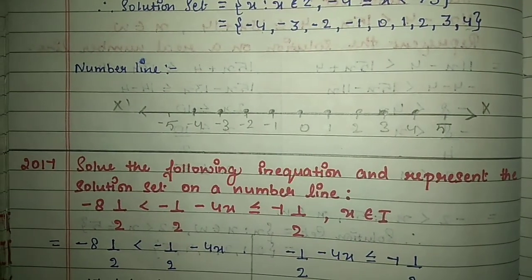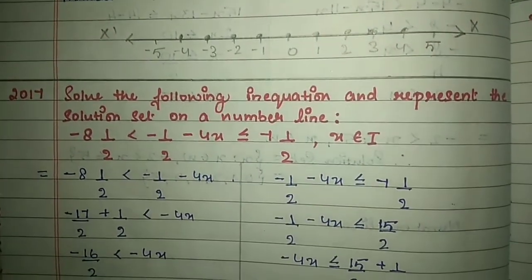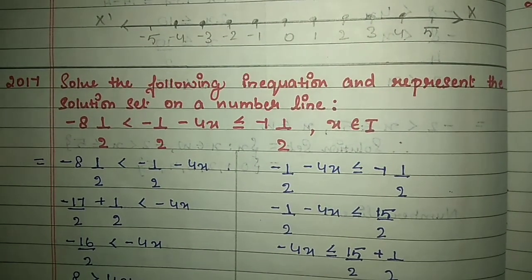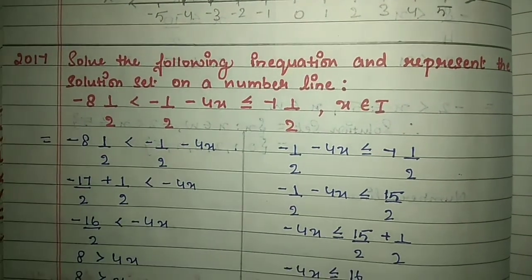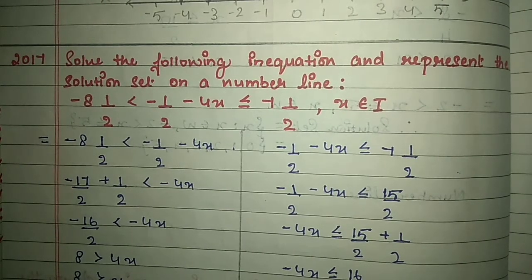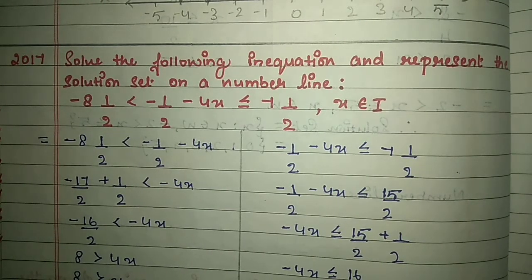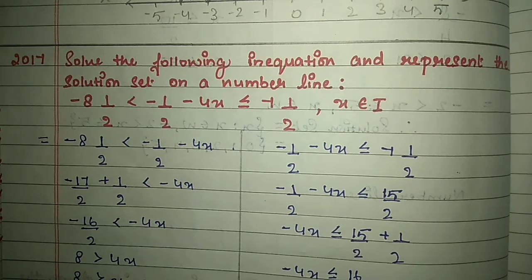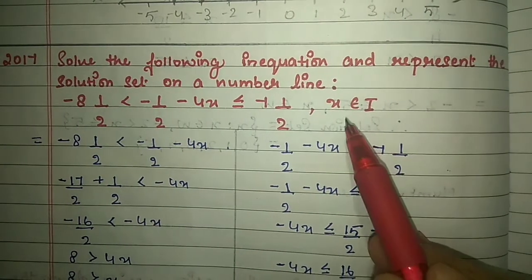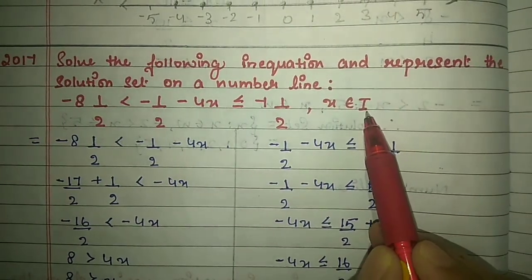Next question from 2017: solve the following inequation and represent the solution set on the number line. The inequation is minus 8 and 1/2 < minus 1/2 minus 4x ≤ 7 and 1/2, where x belongs to I (integers).